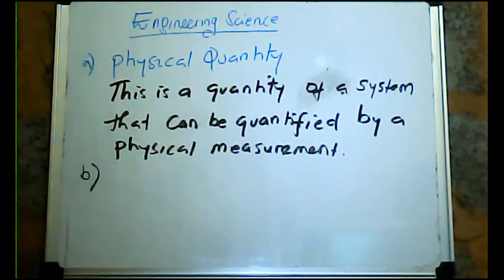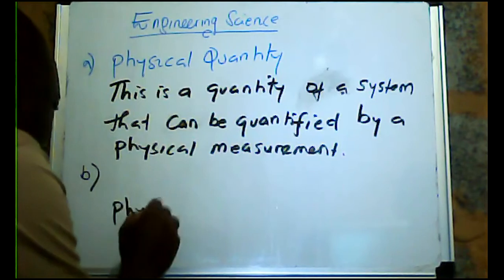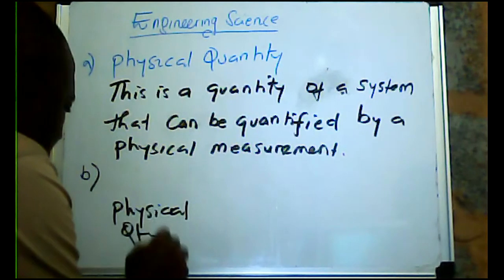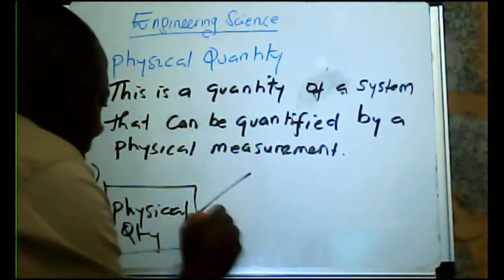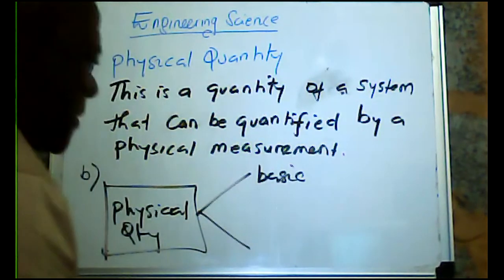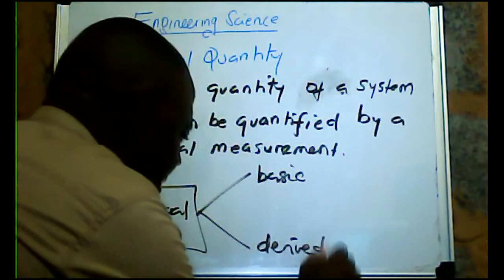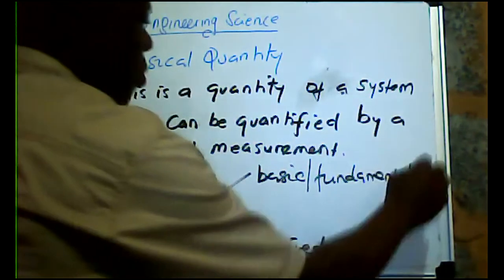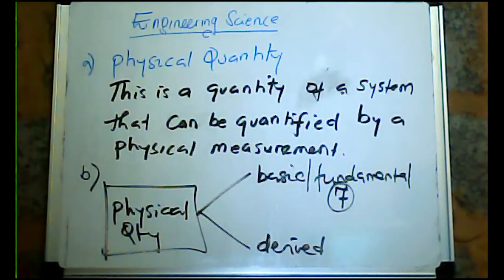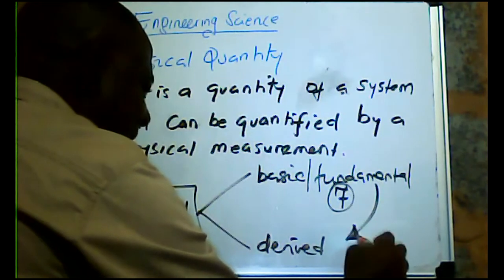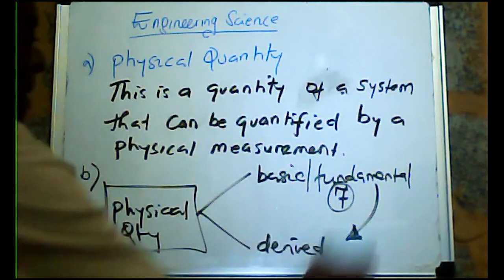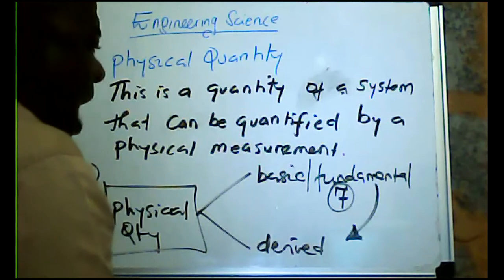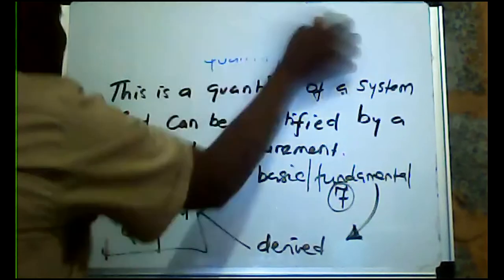Physical quantities are split into two: we have the basic quantities and the derived quantities. The basic quantities are also known as fundamental quantities.